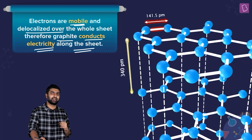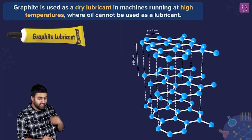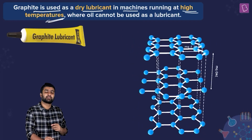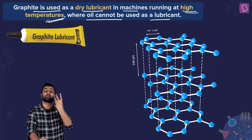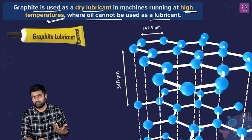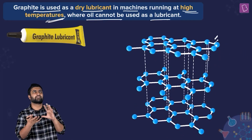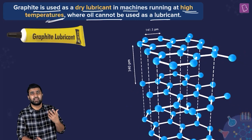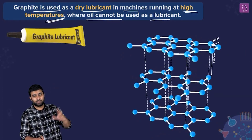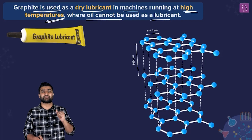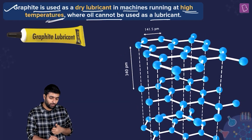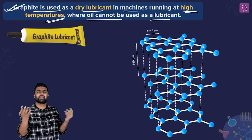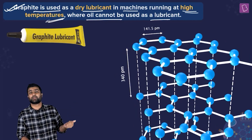Graphite is also used as a dry lubricant in machines running at high temperatures. Oil cannot be used there because beyond about 160–180°C, oil starts to get oxidized and can no longer act as a lubricant. Graphite, on the contrary, due to its extensive bonding and 3D structure, can withstand much higher temperatures.